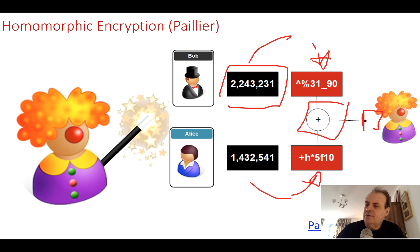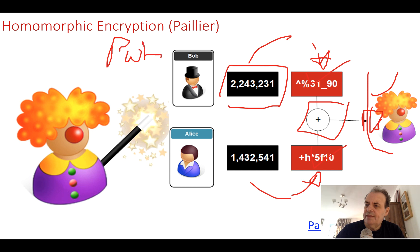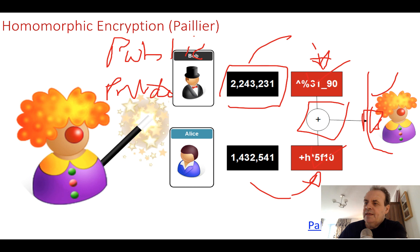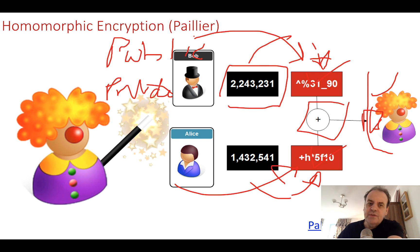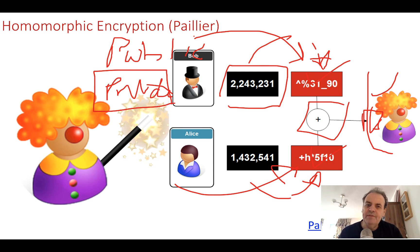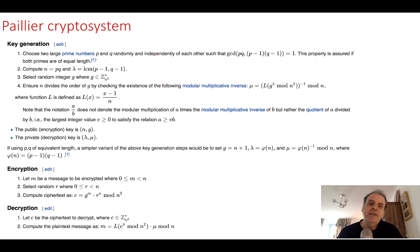The result will also be ciphered, so even if Eve is processing the values, she won't be able to tell the values we're working with or the result. We generate a public key and a private key. The private key is kept secret. With the public key we cipher the values, operate on them, and then use the private key to decrypt the values, keeping them secure as long as we keep the private key secret.